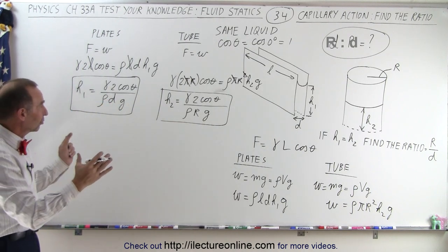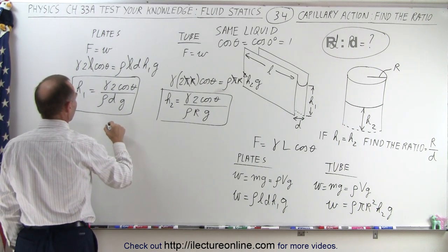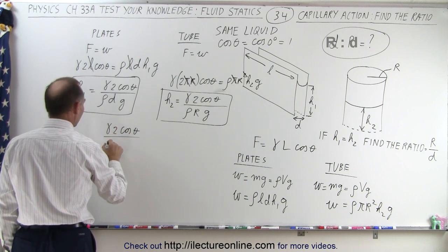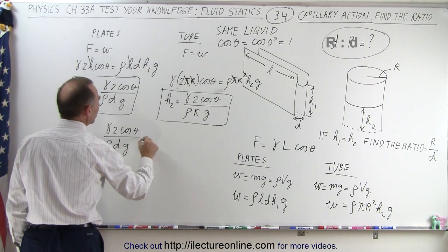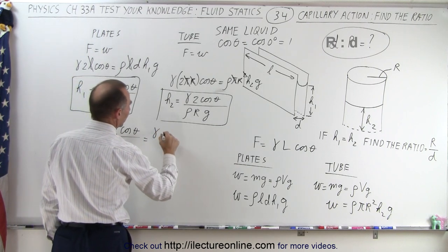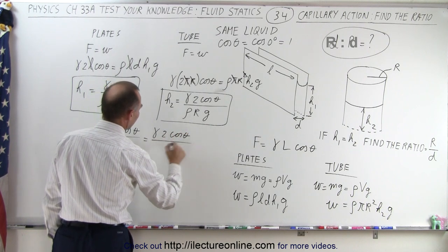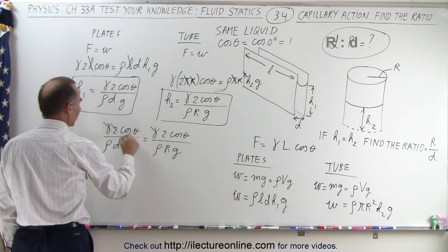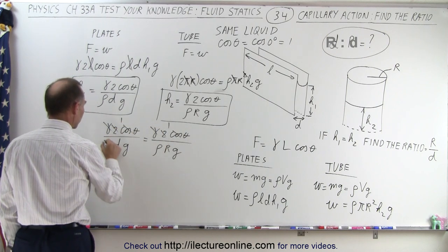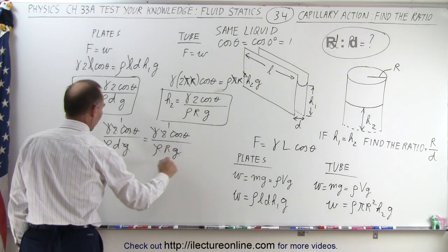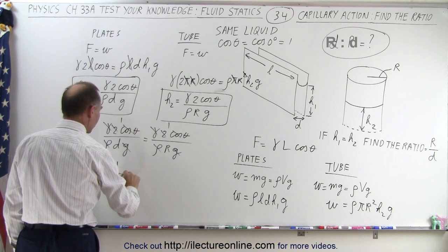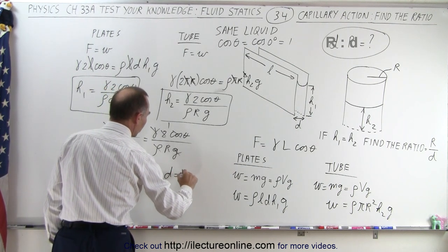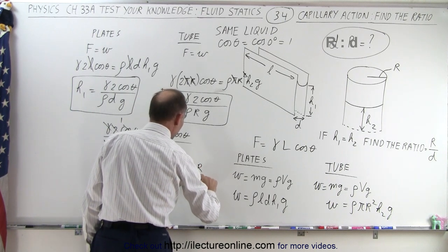Since H1 equals H2, we set the two expressions equal: the capillary constant times 2 cosine theta over rho D g equals the capillary constant times 2 cosine theta over rho R g. The constant, the 2, cosine theta, rho, and g all cancel from both sides, leaving 1 over D equals 1 over R, so D equals R, meaning the ratio R over D equals 1.